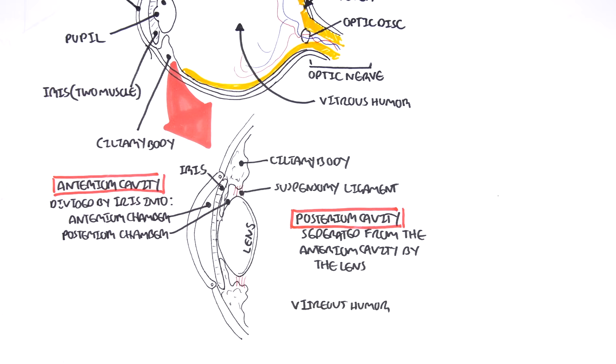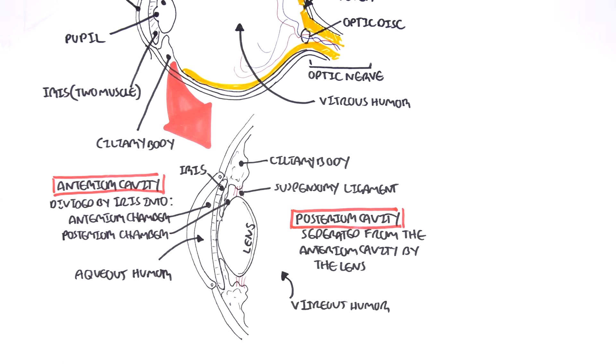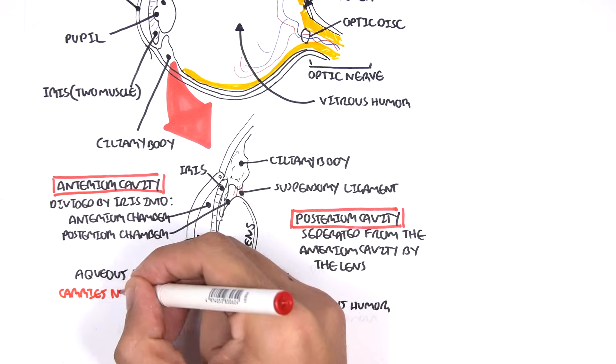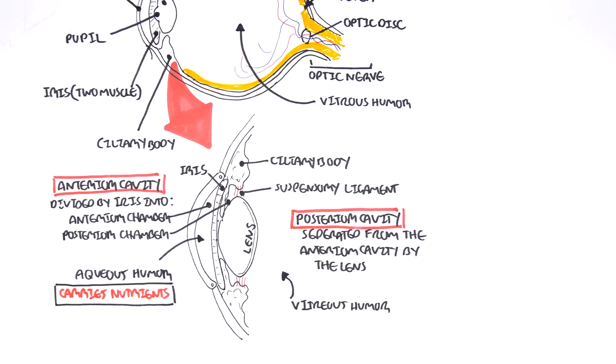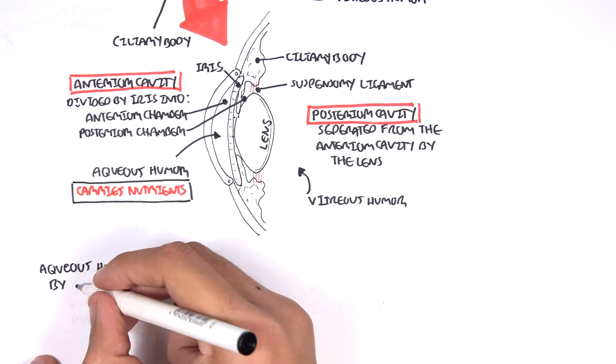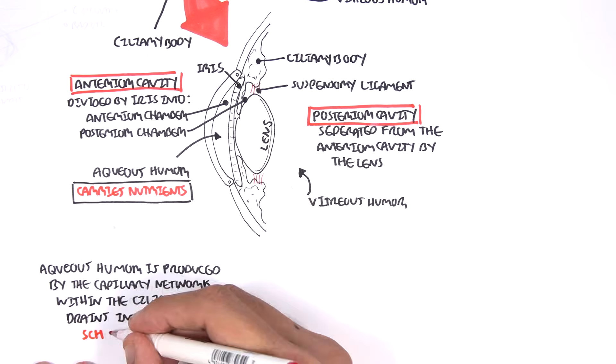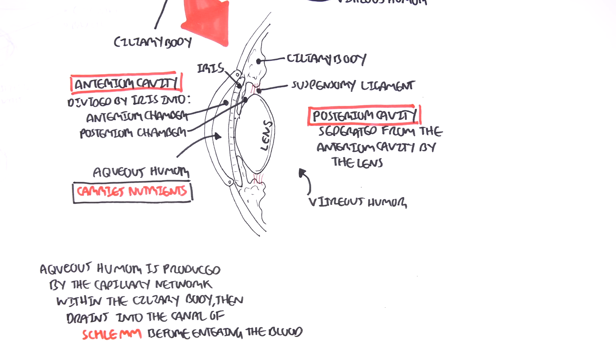The anterior cavity, unlike the posterior cavity, contains a fluid called the aqueous humor. The aqueous humor carries nutrients for the anterior structures of the eye. The aqueous humor is produced by the capillary network within the ciliary bodies, then drains into the canal of Schlem before entering the blood. The canal of Schlem is also known as the scleral venous sinus.